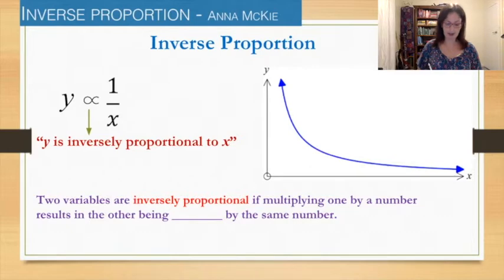Have a look at this sentence here. Two variables are inversely proportional if multiplying one by a number results in the other being what by the same number. Have a think about that. Think about what the last one was in the last video. The connection between the y and the x there. So this is the opposite in that sense. So it's if it's being divided by the same number. I'd write that sentence down.